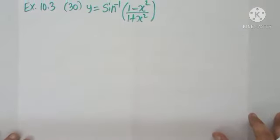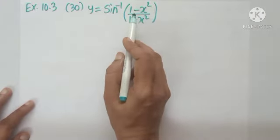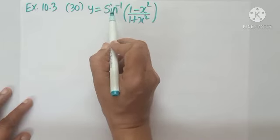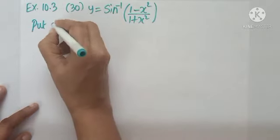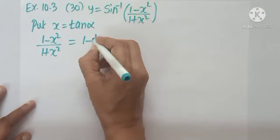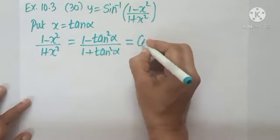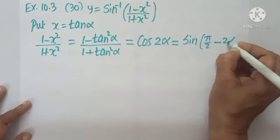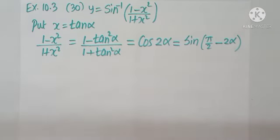Question number 30: y = sin⁻¹((1 − x²)/(1 + x²)). This is a challenging problem where we apply a trigonometry formula to reduce it easily. Put x = tan α. Then (1 − x²)/(1 + x²) becomes (1 − tan²α)/(1 + tan²α), which reduces to cos 2α. And cos 2α can be written as sin(π/2 − 2α).